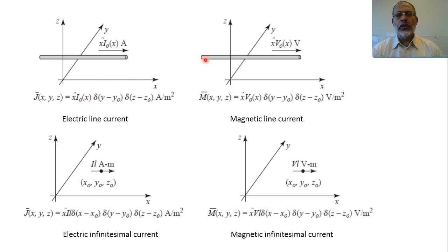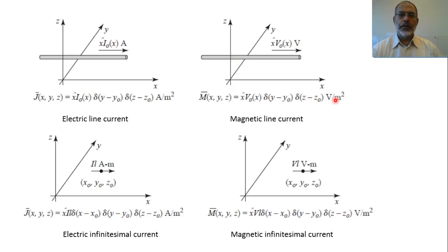Similarly, the equivalent magnetic current along a line would be V₀ of x, with units of volts. If representing it as a volume magnetic current density, the equivalent is the magnitude multiplied by δ(y − y₀) multiplied by δ(z − z₀), with units of volt per meter squared.